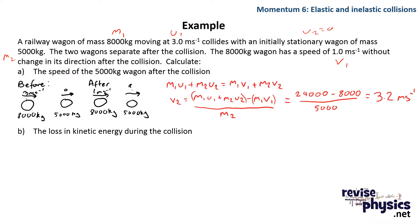First, we use conservation of momentum. Momentum before is just the momentum of the 8,000 kg wagon, since the smaller one contributes zero. Momentum after involves both wagons moving, so we account for both momenta. Rearranging the standard momentum equation to solve for v2 and plugging in our numbers gives a velocity of the smaller wagon of 3.2 meters per second.